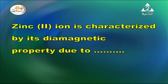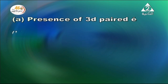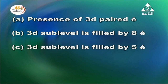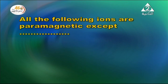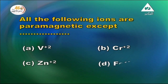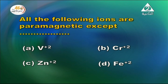MCQ: A substance characterized by its diamagnetic property — this is due to the presence of 3d paired electrons. All the following ions are paramagnetic except: vanadium(2+), chromium(2+), zinc(2+), iron(2+) — the answer is zinc(2+), which has no unpaired electrons and is therefore diamagnetic.